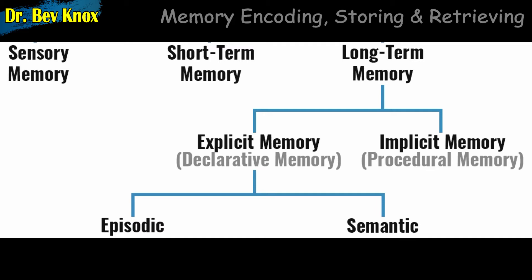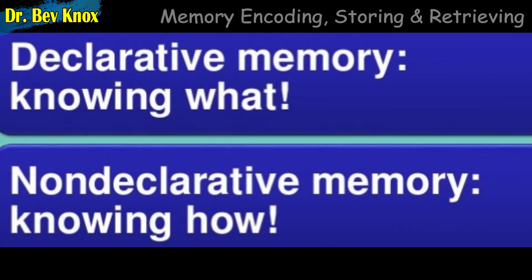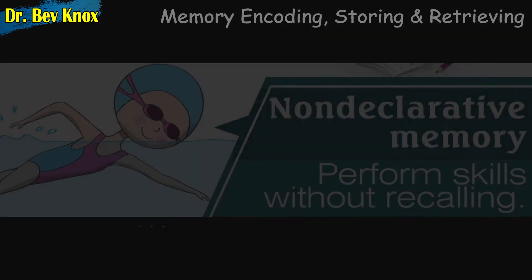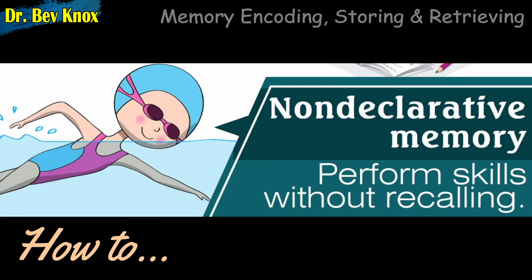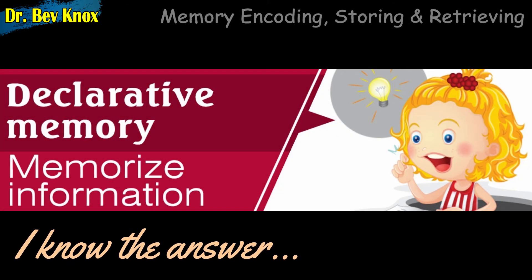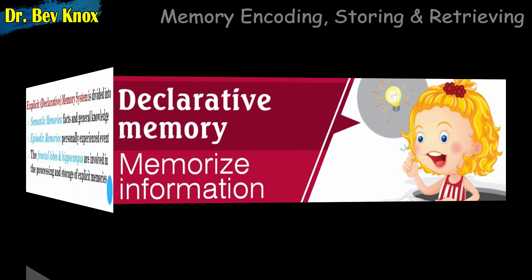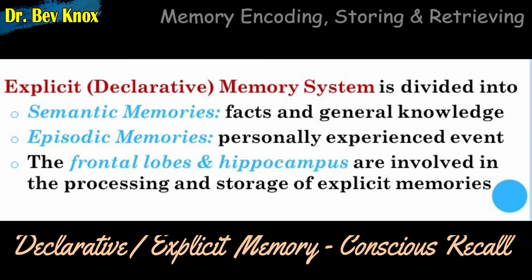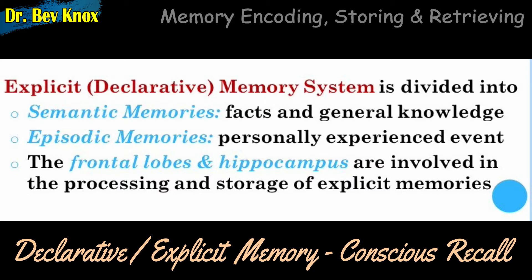One major distinction within long-term memory is that between declarative memory and procedural memory. Declarative memory is memory for factual information — names, faces, dates, and facts such as 'a bike has two wheels.' In contrast, procedural memory, or non-declarative memory, refers to memory for skills and habits, such as how to ride a bike or hit a baseball. Information about things is stored in declarative memory; information about how to do things is stored in procedural memory.